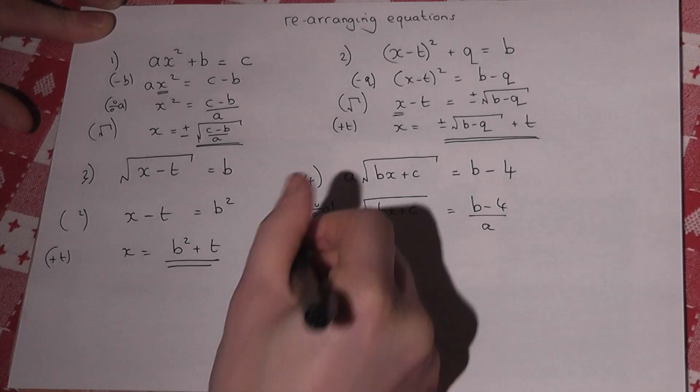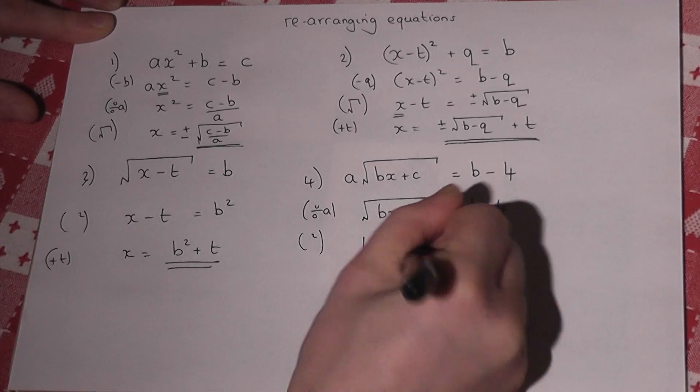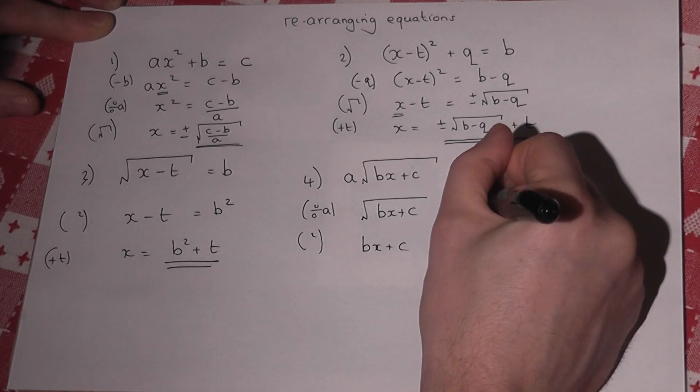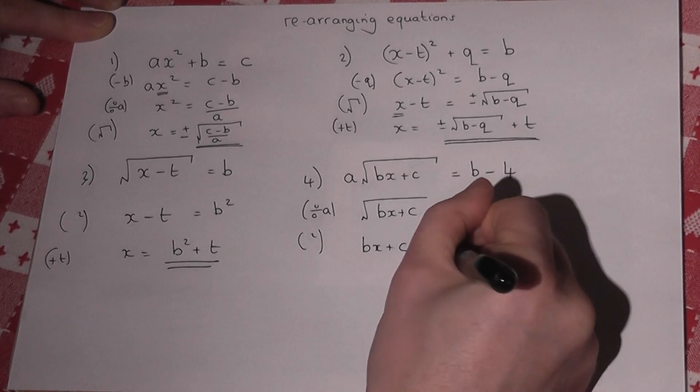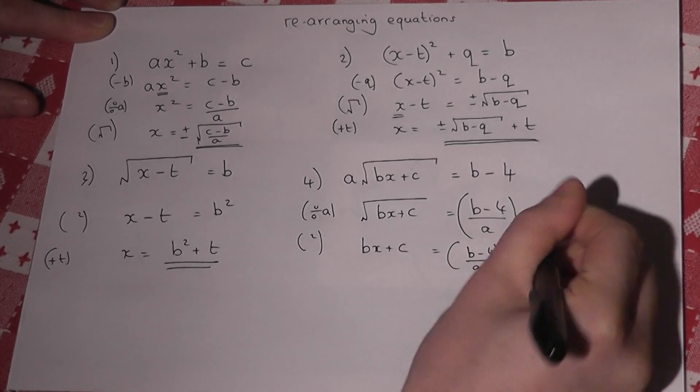I've got a square root there. So I must square. So we get bx plus c. But this equals the entire fraction squared. So imagine a big bracket around that. It equals b minus 4 over a, all squared.